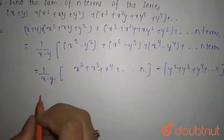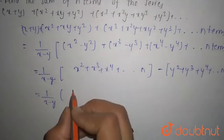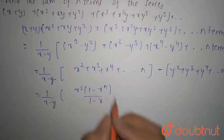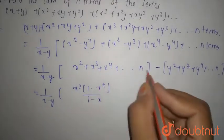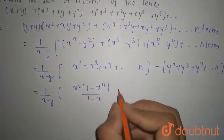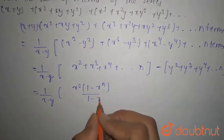This comes out to be 1/(x-y) times [x²(1-x^n)/(1-x) by the formula for sum of GP terms, which is a(1-r^n)/(1-r)].